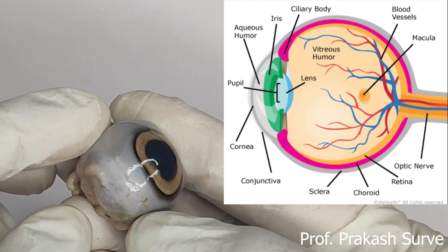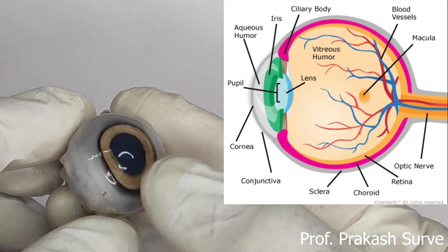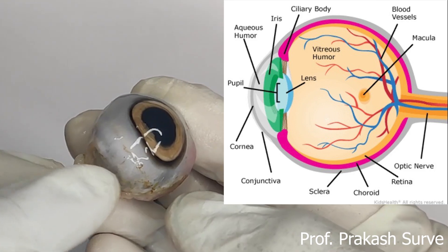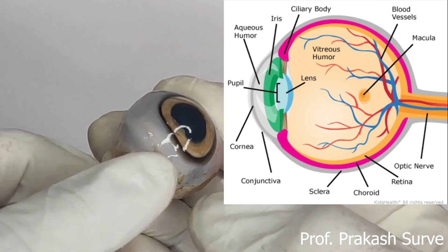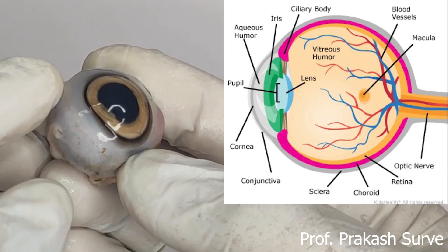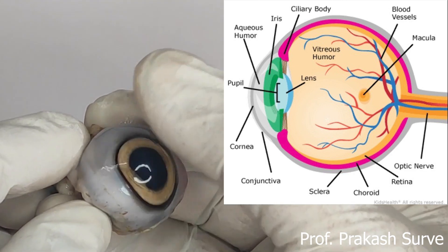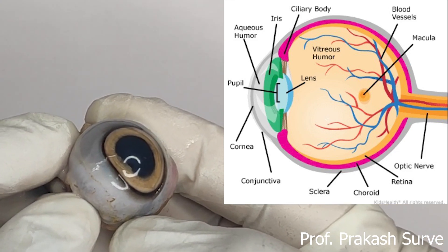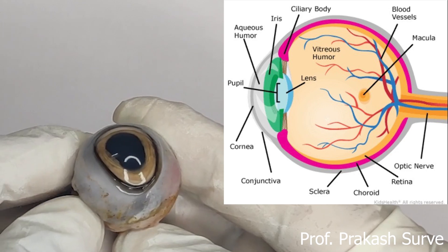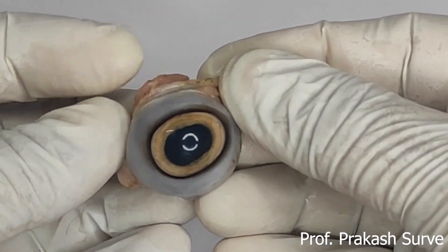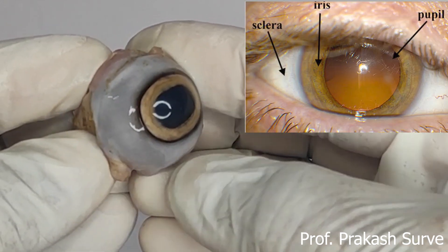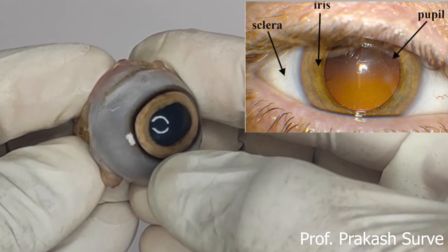The cornea is also nourished by lacrimal secretion from the side. The entire cornea as well as the exposed part of the sclera is covered by a transparent membranous covering called the conjunctiva, which provides protection as well as lubrication.